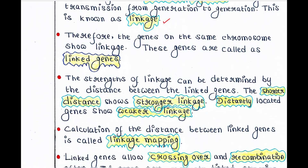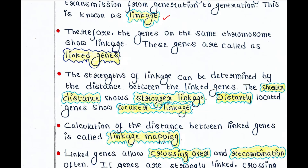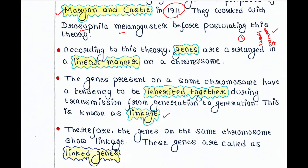The strength of linkage can be determined by the distance between the linked genes. The shorter distance shows stronger linkage. Distantly located genes show weaker linkage. Suppose chromosome number 1 contains these 5 genes A to E. Genes A and B are placed almost together — the distance between A and B is very less. That means A and B genes will be more linked compared to A and D or B and E. So A and B are more connected, more linked, and greater is the linkage.